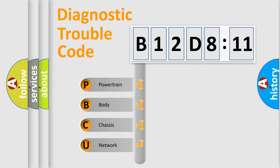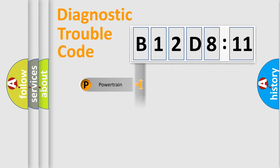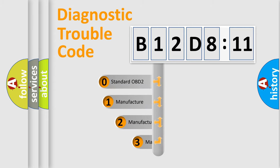We divide the electric system of automobile into four basic units: Powertrain, Body, Chassis, and Network. This distribution is defined in the first character code.